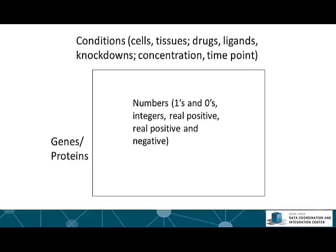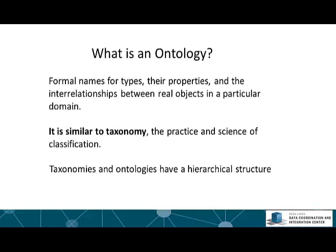Typically the data produced by such experiments follows this structure: it is in a table where the rows are the measured variables — many times these are surrogates for genes or proteins. The columns represent the conditions: the cells used in the experiments, the perturbation, the time point when the measurements were taken, and the concentration if we are dealing with drugs. Inside the table, the data are numbers — they can be ones or zeros, real positive numbers, or integers and real numbers with positive or negative values. So the data is the numbers inside the table, and the metadata are the descriptors of the rows and the columns.